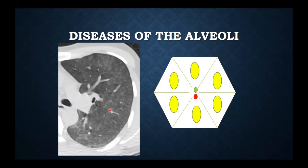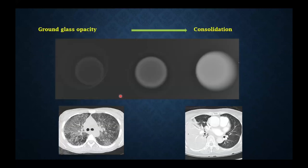This is somebody who has hot tub lung — they have MAI infection in their alveoli — and it gives you these low-density round circles on the CT scan. I am a scientist at heart: I took three glasses of water, put a little water in the first glass, filled the second glass half full, and the third all the way full. And the same thing happens with the CT scan.